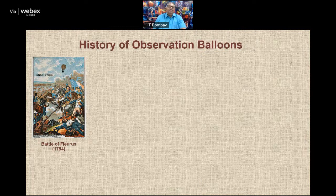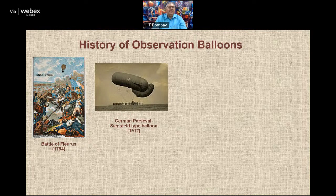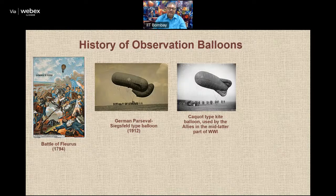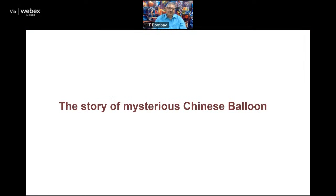Observation balloons are not new — they have been used for many, many years. For example, at the Battle of Fleurus in 1794, armed forces deployed a balloon with a person on board with binoculars to observe the enemy. In 1912, Germans came up with the Parseval-Siegfeld type balloon, which was further improved into a Kite balloon — the Caquot type — and then we have the World War I German observation balloon.